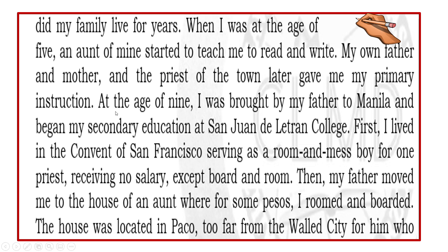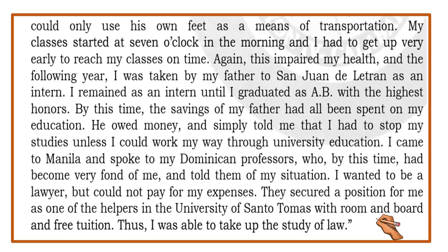When I was at the age of five, an aunt of mine started to teach me to read and write. My own father, mother, and the priest of the town later gave me my primary instruction. At the age of nine, I was brought by my father to Manila and began my secondary education at San Juan de Letran College. First I lived in the convent of San Francisco, serving as a room and mess boy for one priest, receiving no salary except board and room. Then my father moved me to the house of an aunt where for some pesos I roomed and boarded. The house was located in Paco — too far from the walled city for one who could only use his own feet as a means of transportation.